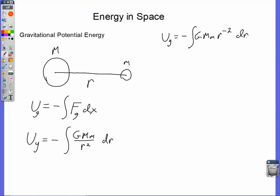We're going to integrate this with respect to r. Rewriting this in a form that I can use the power rule for integration, we have negative integral of big G, big M, little m, r to the negative 2 dr. Remember that your exponent goes up by 1 — that's going to give us r to the negative 1 — and we have to divide by the new exponent, which is negative 1. The m's are both constants, they come out front as well. And we're going to get a plus C inside because it was an indefinite integral.